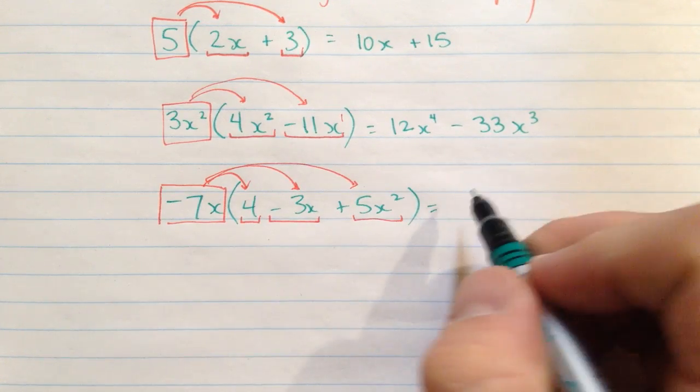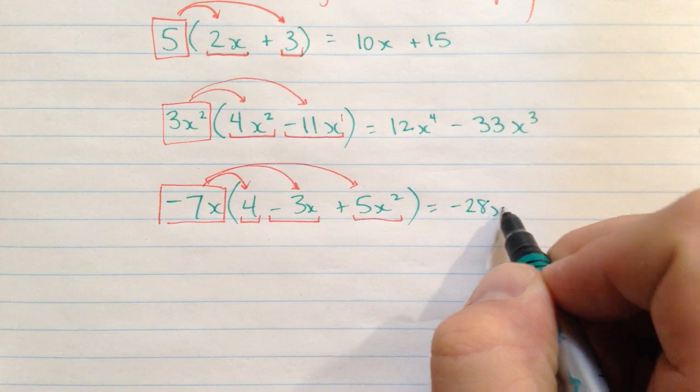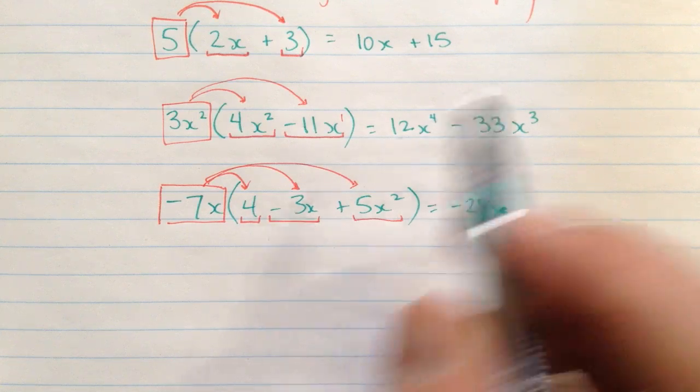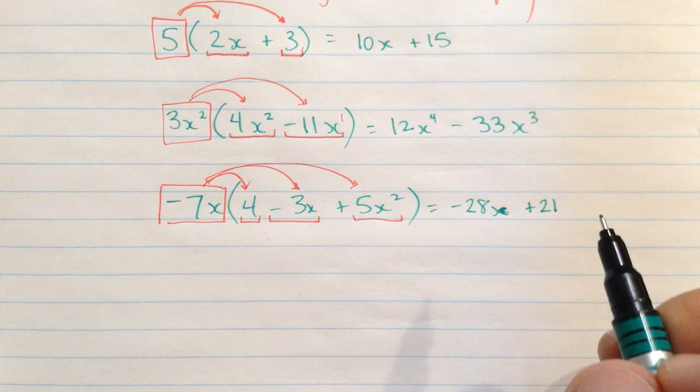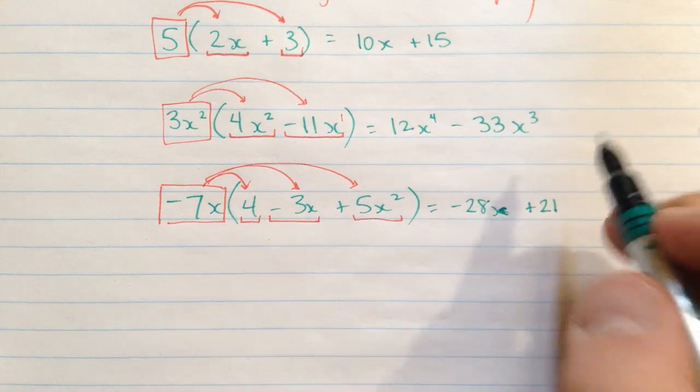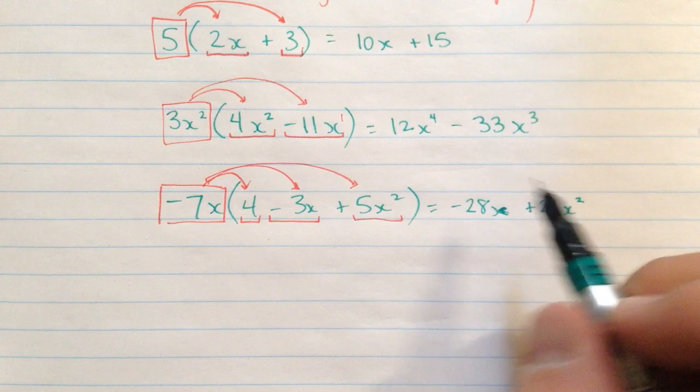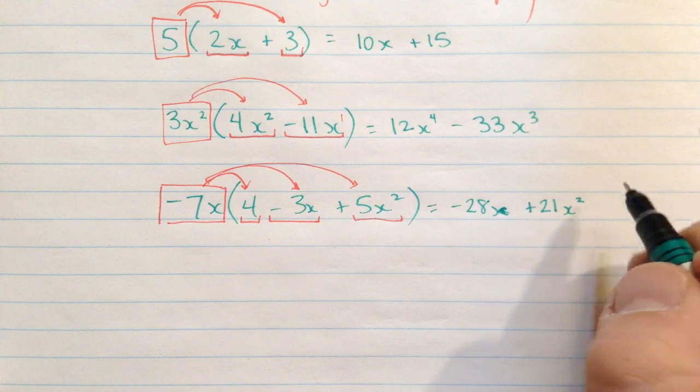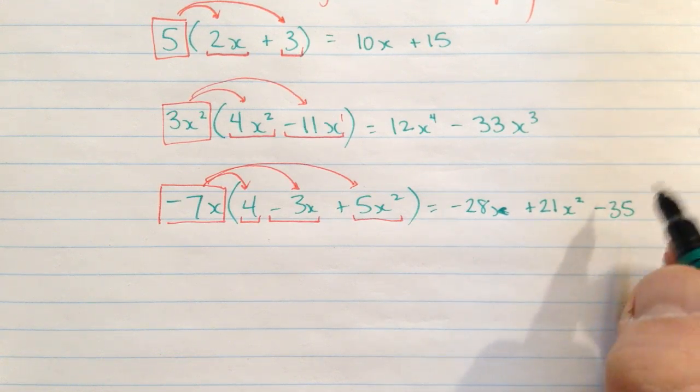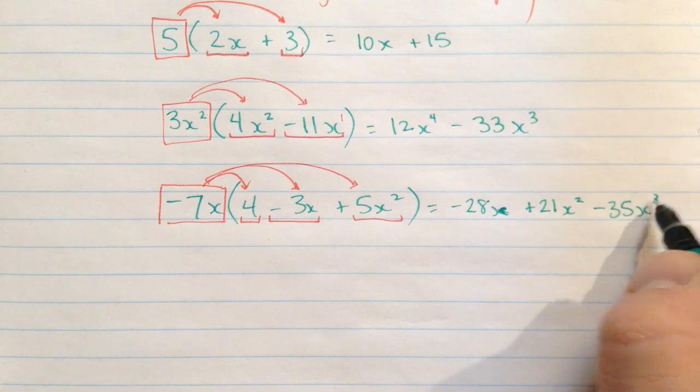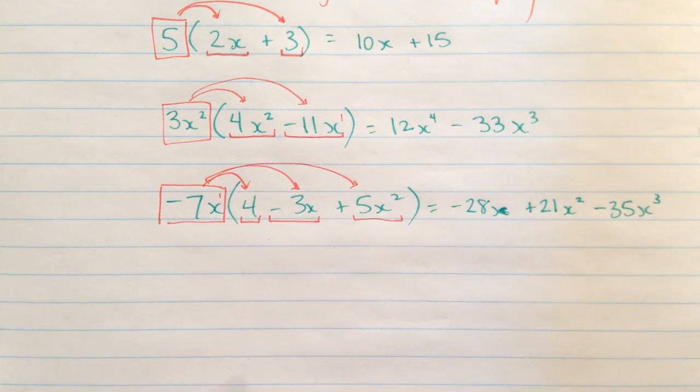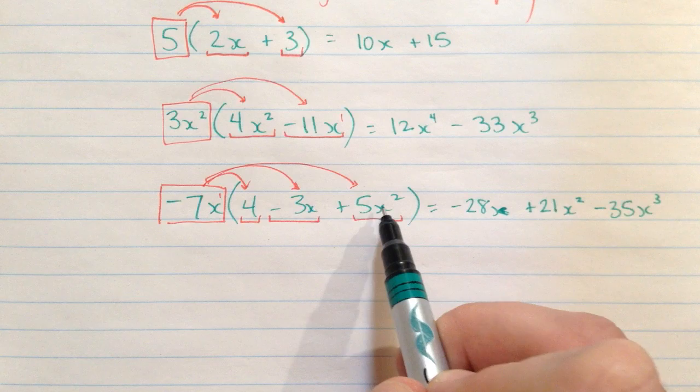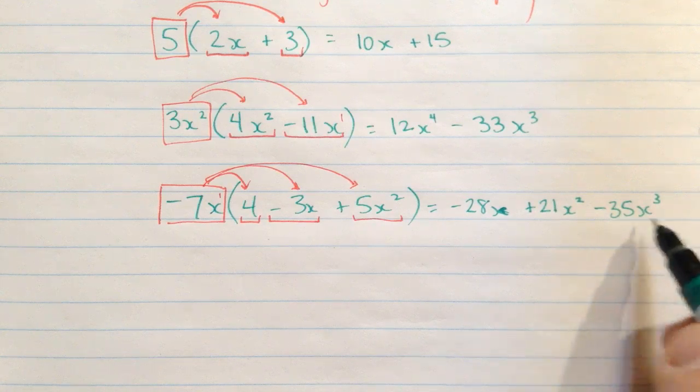Negative 7x times 4 is negative 28, and the variable part is x. Negative 7x times negative 3x, positive 21, and the variable part will be x times x, which is x squared. And last, we have negative 7x times 5x squared. Negative 7 times positive 5 will be negative 35, and the variable part is x cubed this time, because we have the understood 1 there. Adding those exponents, 1 plus 2 is 3, or you can just think of it as x, x, x. That's 3 x's multiplied together, x cubed.